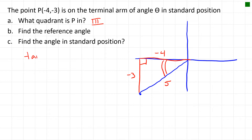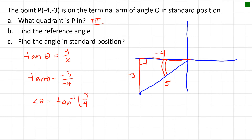To calculate the reference angle, we're going to use the tan ratio. The tan of that angle is y over x, so the tan ratio is negative 3 over negative 4. To find the angle, I take the inverse tan of 3 over 4, and that equals 37 degrees rounded to the nearest degree. So the reference angle is 37 degrees.